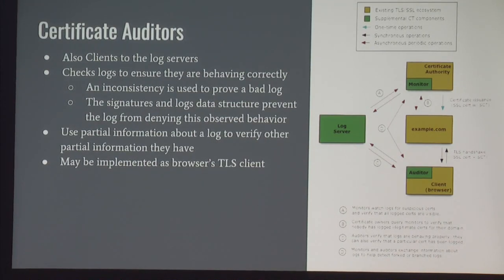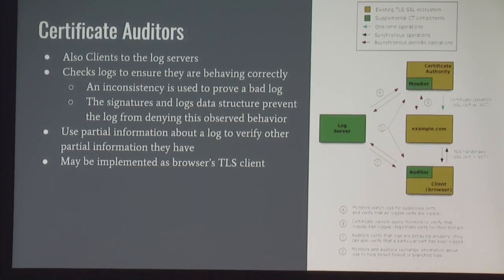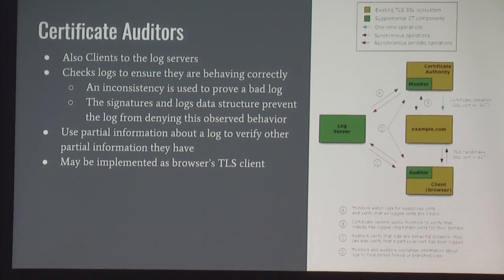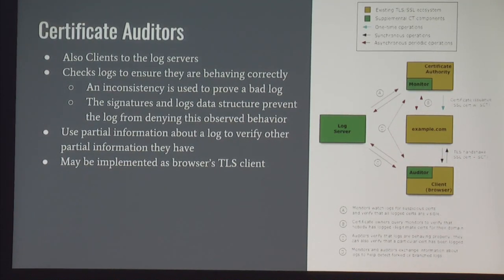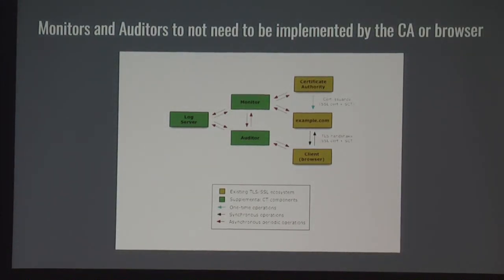The last component is the certificate auditors. These are clients to the log service that check the logs and make sure they're behaving correctly — making sure there's no inconsistency, no skipped serial numbers, no missing or extra certificates. The signatures and log data structure are a Merkle hash tree, which is a cryptographically secure way of showing that you cannot modify the log after it exists. These may be implemented in a browser's TLS client. Chrome, as of version 61, has already started doing this. Monitors and auditors can also speak to each other if they're not implemented at the CA or the browser, and anyone can run either of these three components on their own.